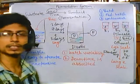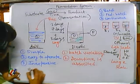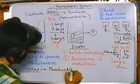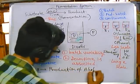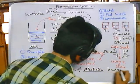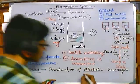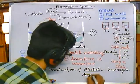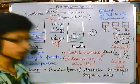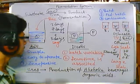Despite the disadvantages, batch fermentation is still widely utilized because it is simple, easy to operate, and inexpensive. It is commonly used in the production of alcoholic beverages and organic acids.